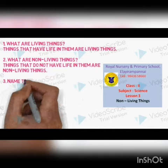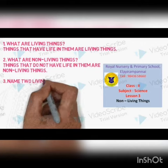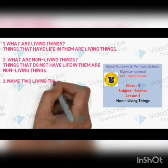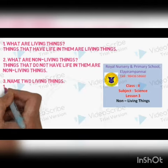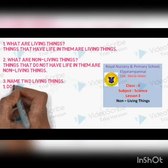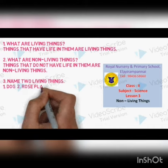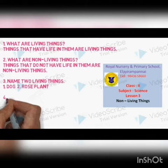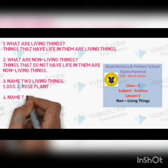Name two living things. Number 1: dog. Number 2: rose plant.